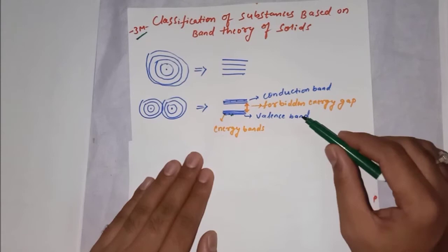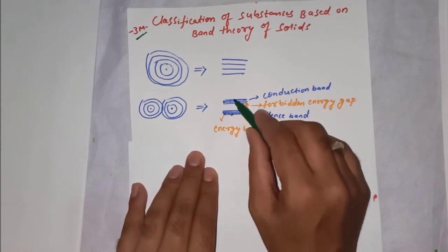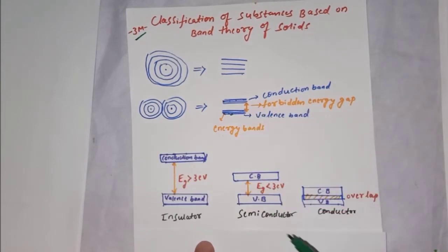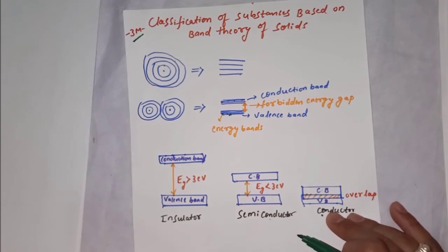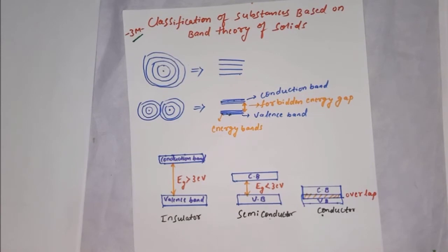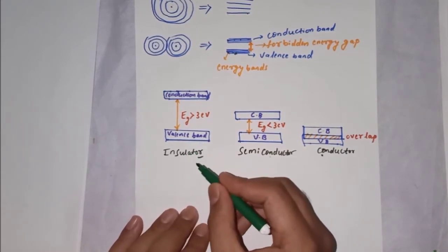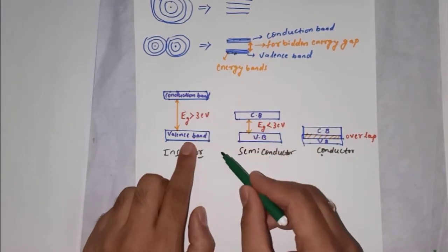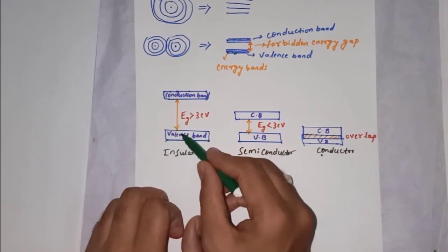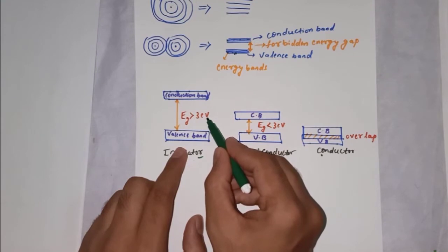Based on these energy bands, substances are classified as insulators, semiconductors, and conductors. For an insulator, the lower band is the valence band and the upper band is the conduction band. Many electrons are available but the gap between them is very high — it is of the order of greater than 3 electron volts.